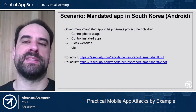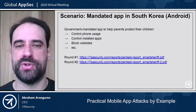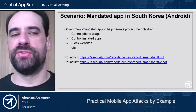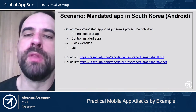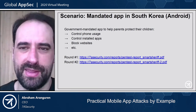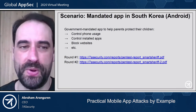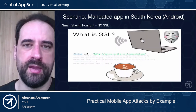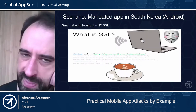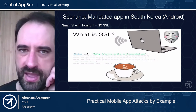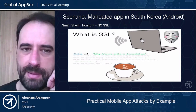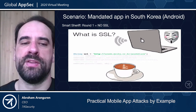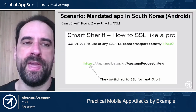Now let's look at SmartSheriff, the mandated application in South Korea — the one I hinted about at the beginning. Everybody in South Korea was forced to use this. It was meant for parents to control their children. Unfortunately the application was really broken as these two reports show. The first time we tested it, the application was not using any SSL at all, so if a child was using public Wi-Fi, a bad actor could see all URLs and requests.